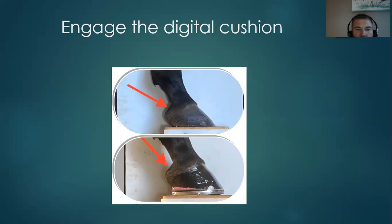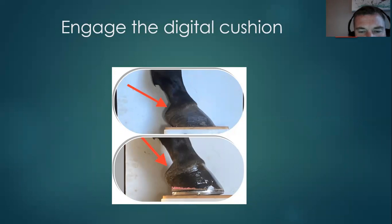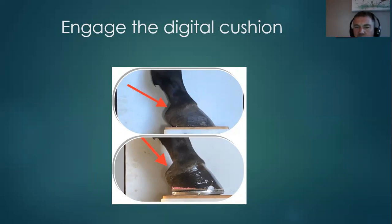We can see the same horse — only about an hour between these images. The area above the heel bulbs has changed in angle. That's from the frog getting fully loaded with a nice frog support made up of leather and synthetic material. Breakover underneath the toe there has helped to facilitate a little more alignment, and the pastern and fetlock has certainly come up since we made this intervention.